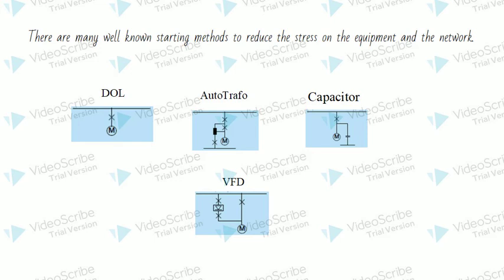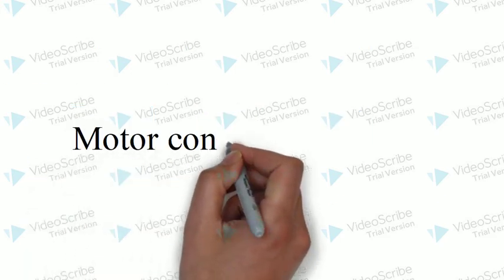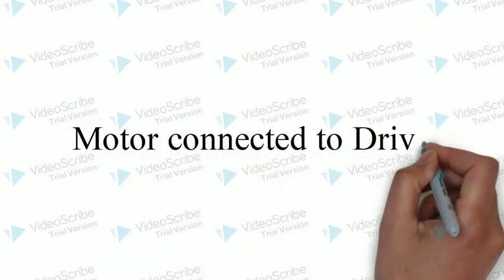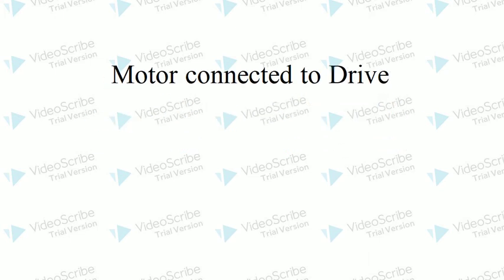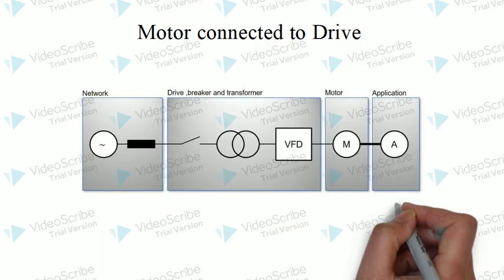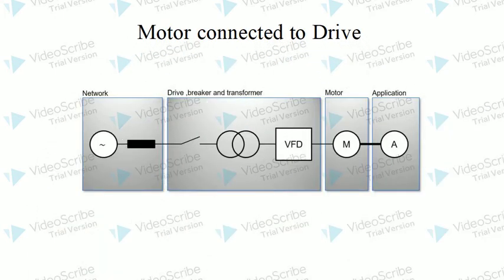Now let's see how the motor is connected to the drive and network. Between the network and motor, we have a breaker feeding to a transformer and VFD. The VFD output is connected to the motor. VFD converts AC supply to DC and back DC to AC to control motor voltage and frequency. We will look into each and every part of the VFD in upcoming videos.